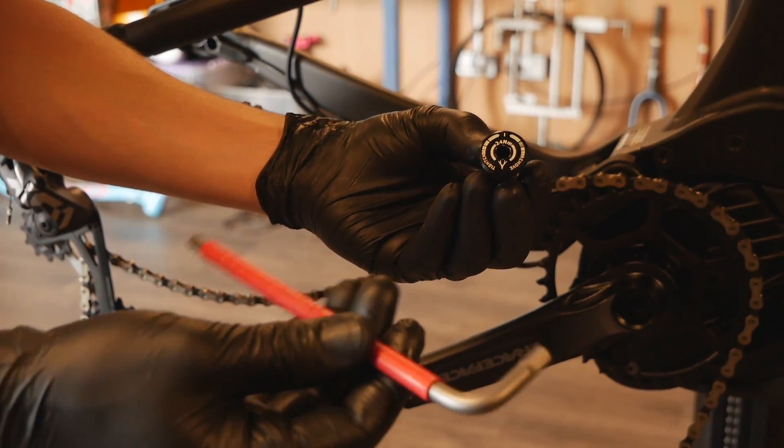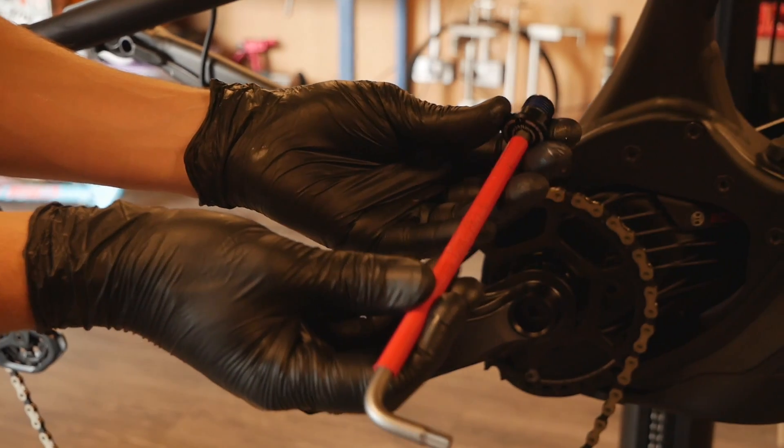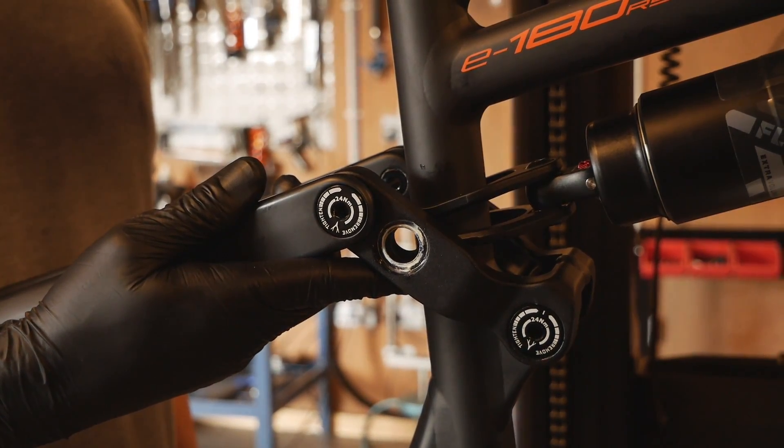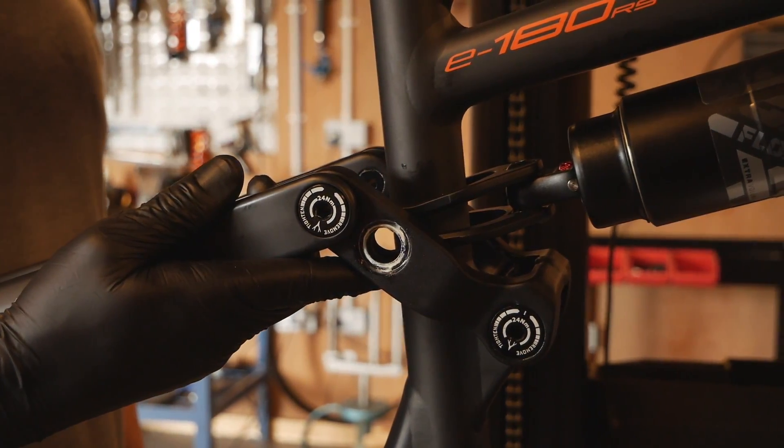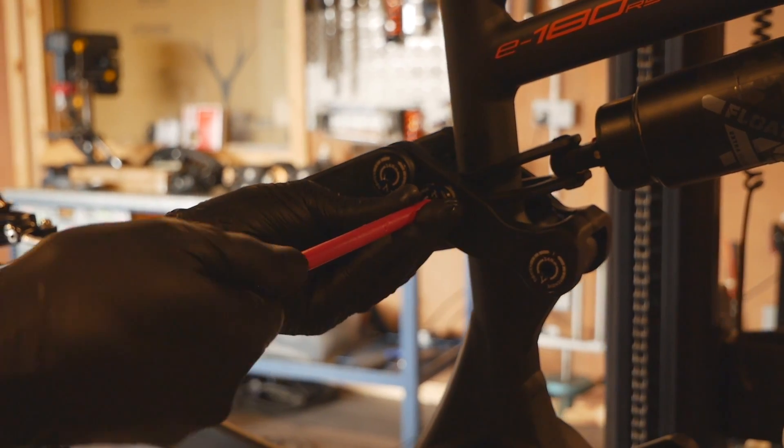We then refit the linkage using your 6mm allen key. This may involve lifting the rear wheel to help with alignment. Torque to 24 newton meters.